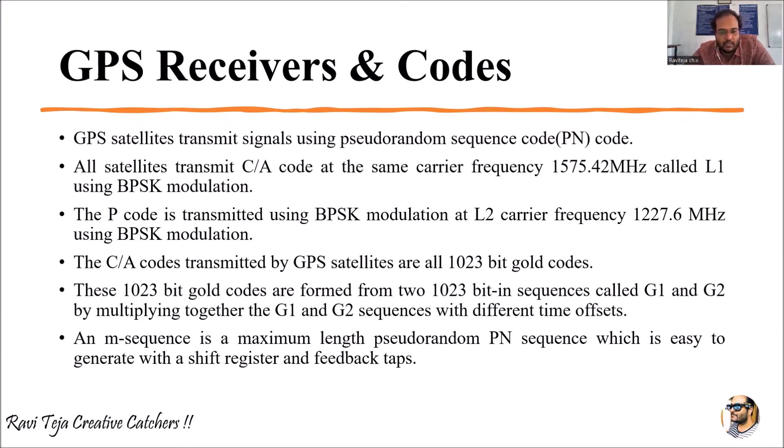The P code is transmitted using the same modulation, BPSK, but with L2 carrier frequency. This particular frequency will be 1227 megahertz, and the C/A codes are transmitted by the GPS satellites.